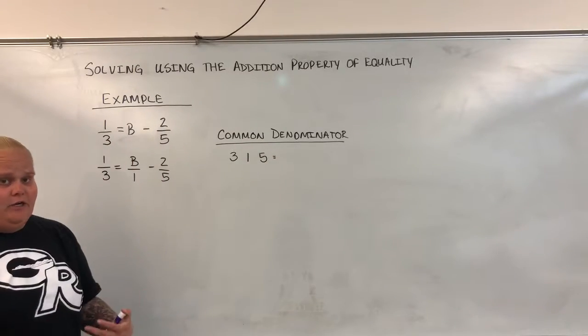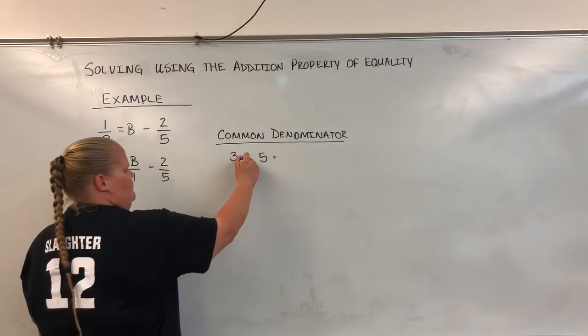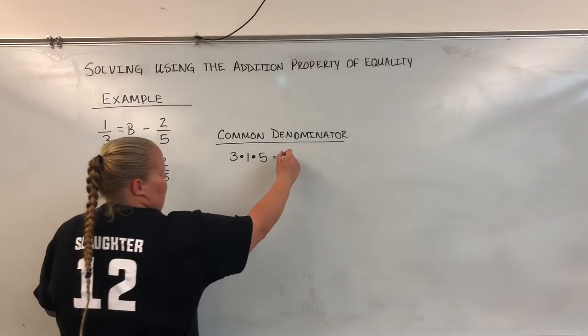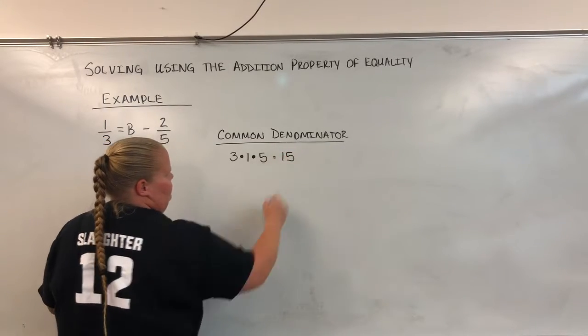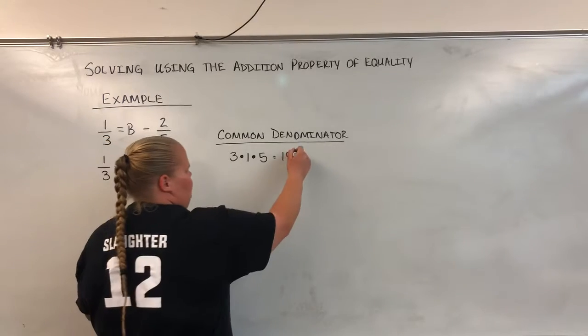The easiest way to find a common denominator is to just multiply all of these together. 3 times 1 times 5, that's going to be 15. So 15 is going to be our common denominator.